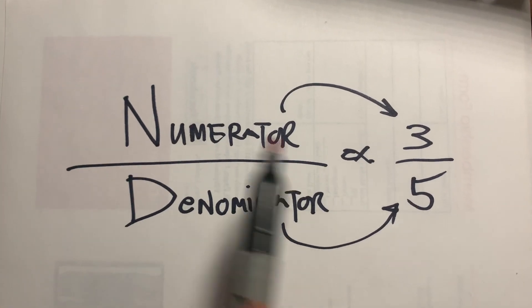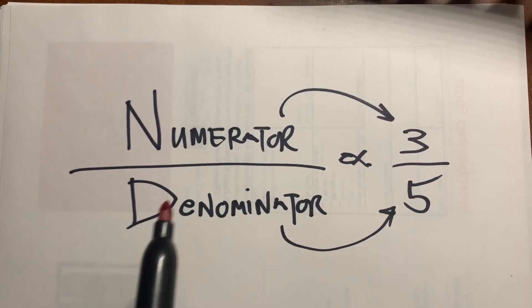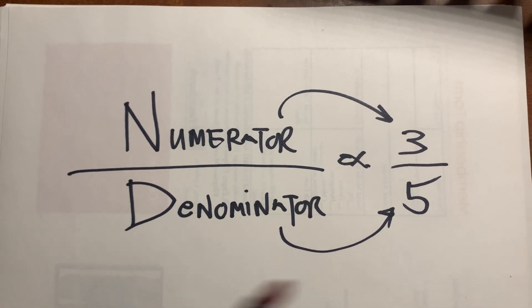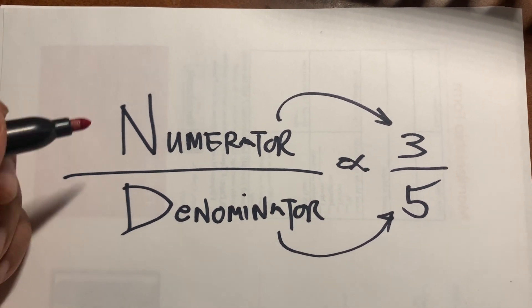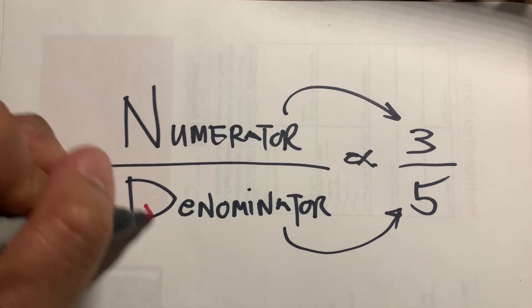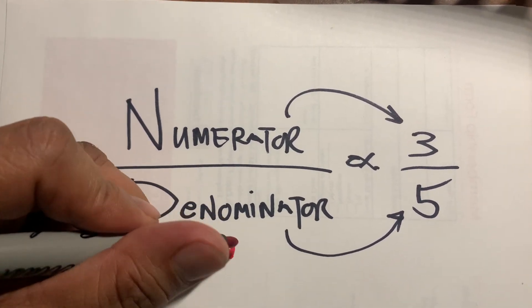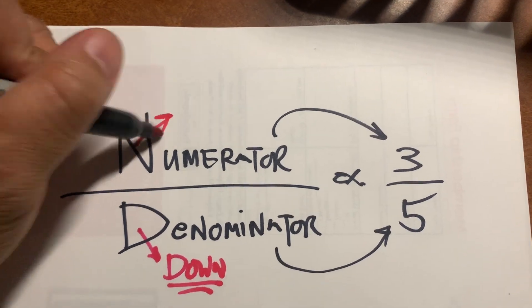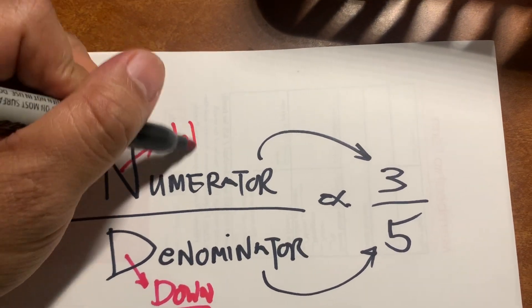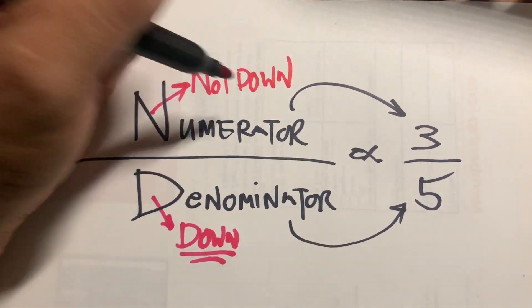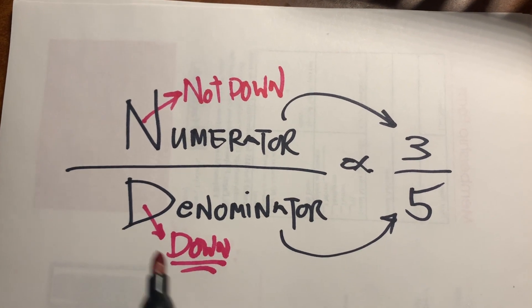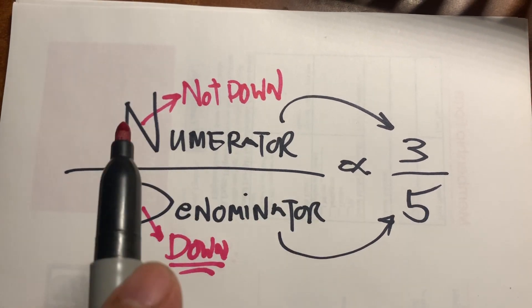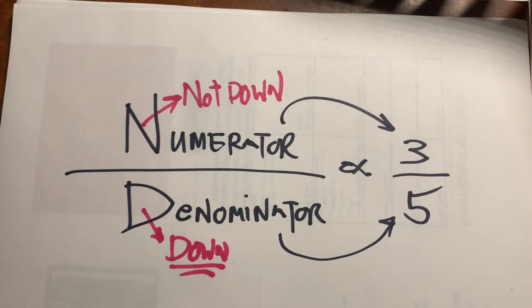So a fraction has a numerator, the one on top, and the denominator, the one below. So you won't forget it. Remember, D represents down. So the number down, denominator. And N represents not down. Five, denominator down. Three, numerator not down. Therefore, it is up.